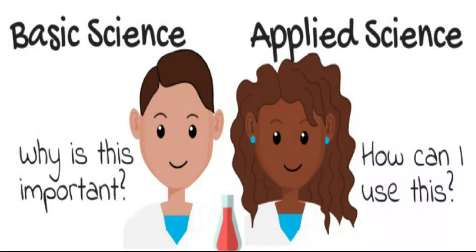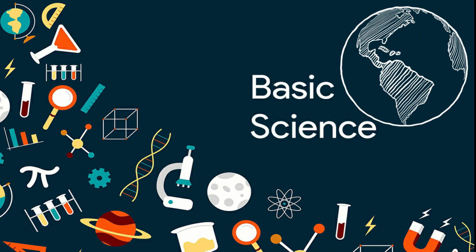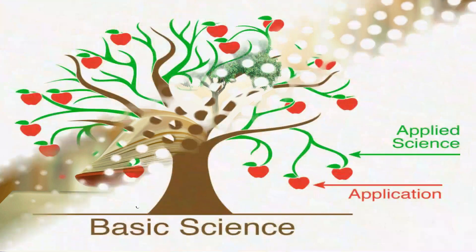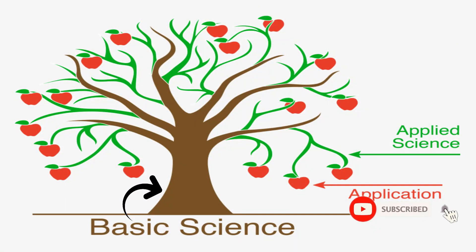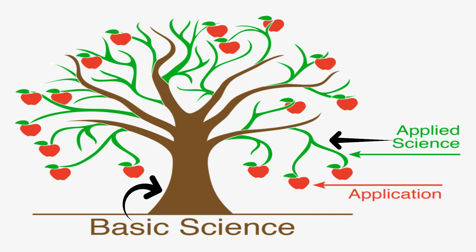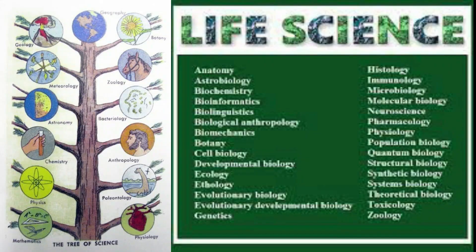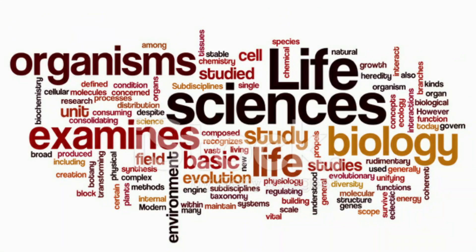Do you know the difference between basic and applied science? Basic science is concerned with the process of discovery, or how things work, and does not focus on how that discovery will be used. Applied science takes information that already exists and utilizes it for the solution of existing problems. That means applied science is based on basic science. There are more than 30 different branches of life science, but in this session we will review some of the major branches.